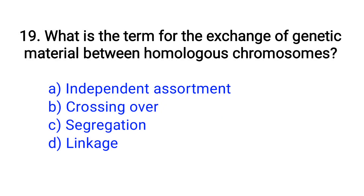Question number 19. What is the term for the exchange of genetic material between homologous chromosomes? Option A: Independent assortment, B: Crossing over, C: Segregation, D: Linkage. The right answer is Option B: Crossing over.